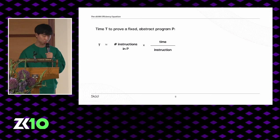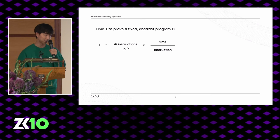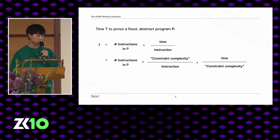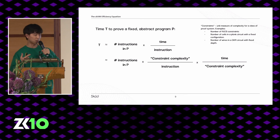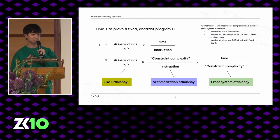Within a traditional machine, efficiency is roughly correlated to the number of instructions times the time to execute each instruction. Translated to the ZKVM context, this becomes the number of instructions times the constraint complexity per instruction — think number of R1CS gates or cells in a Plonkish circuit — times the time to prove per constraint. We divide these into three parts: ISA efficiency, arithmetization efficiency, and proof system efficiency.